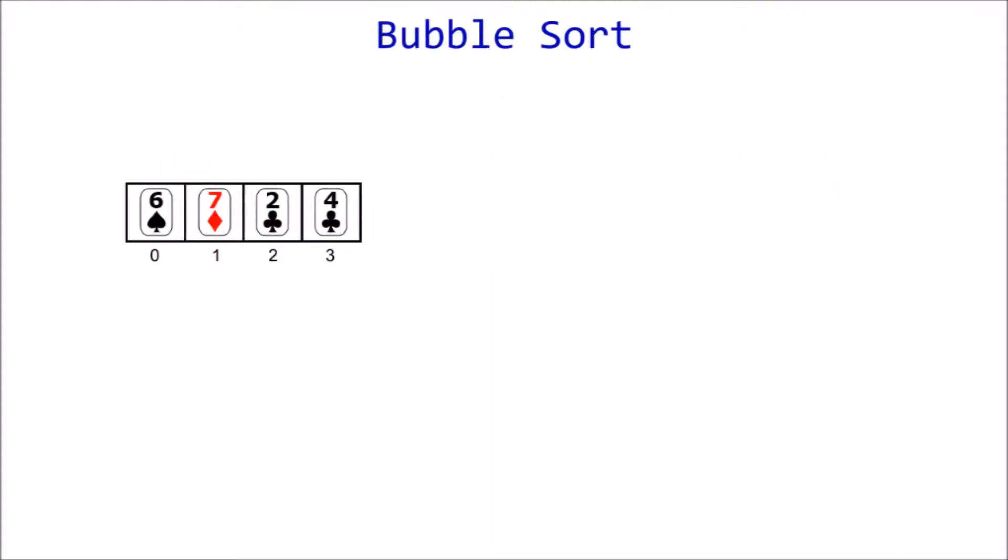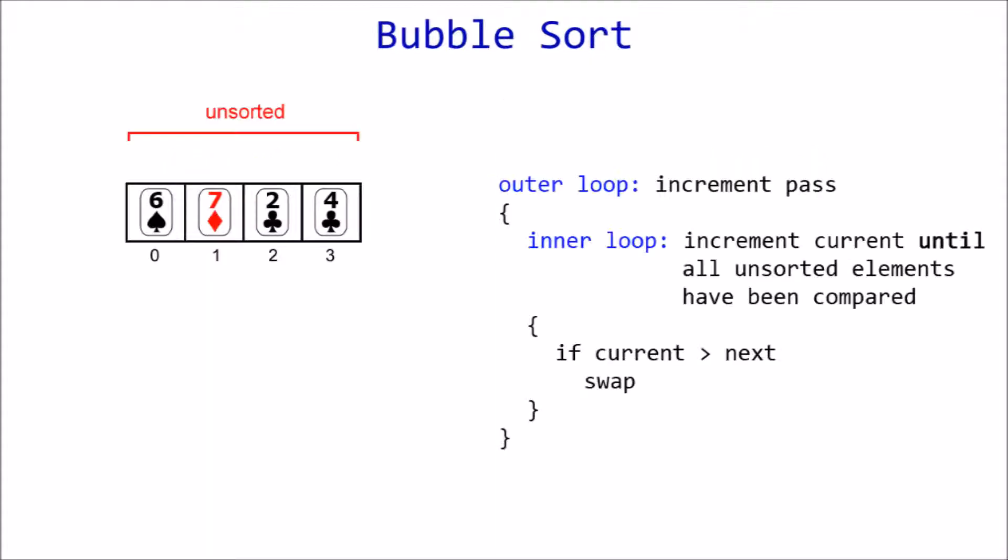Here we have an array of four cards, which is initially labeled as unsorted. The inner loop executes a single pass through the array, while the outer loop enables that pass to run multiple times. We start things off by stepping into the first pass. We'll be keeping track of how many comparisons are made in each pass.